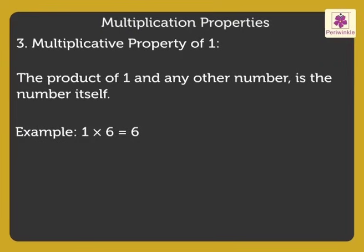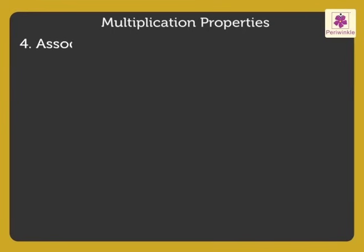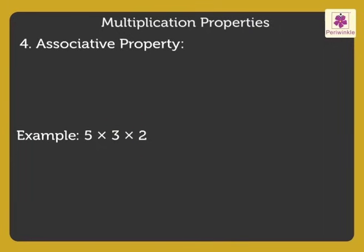Today, we will also learn one more property which is called associative property. Look at the example 5 × 3 × 2. Let us group two numbers and then find the answer. First, let us group 5 × 3 in brackets, times 2, which is equal to 15 × 2, which is equal to 30.